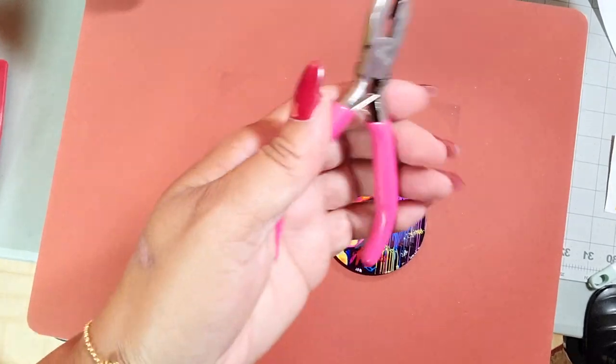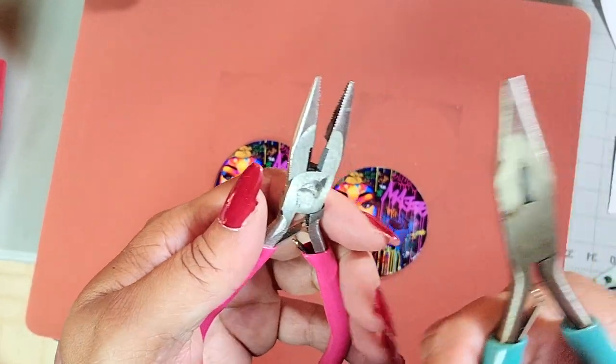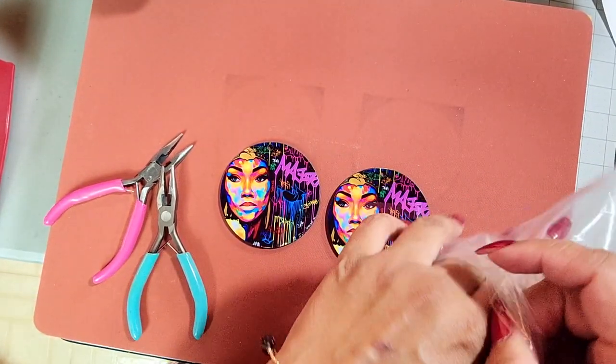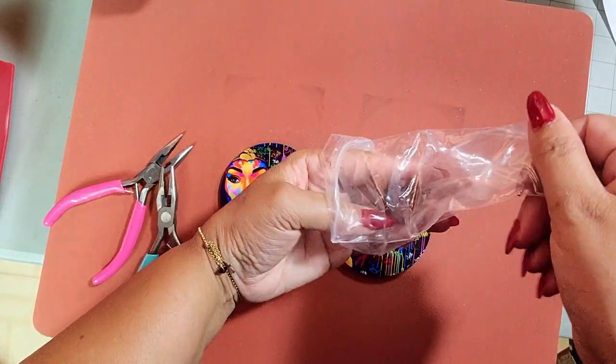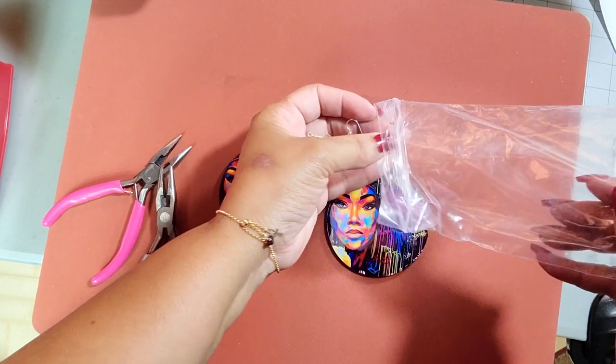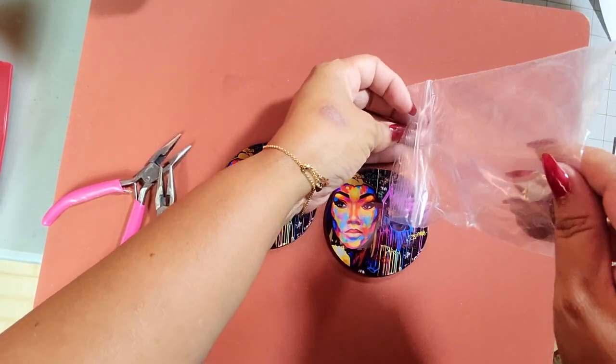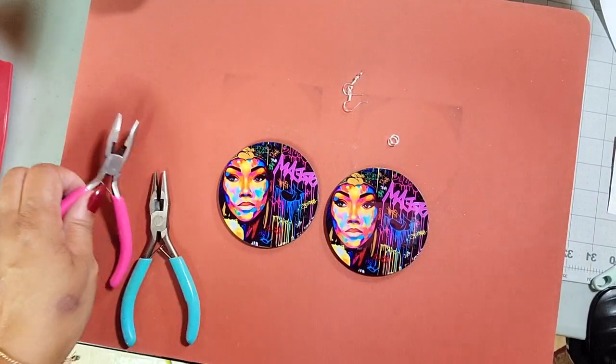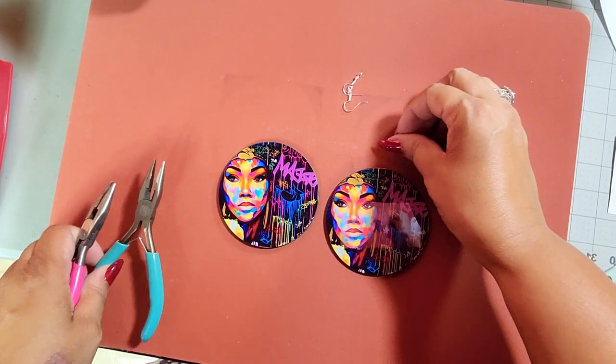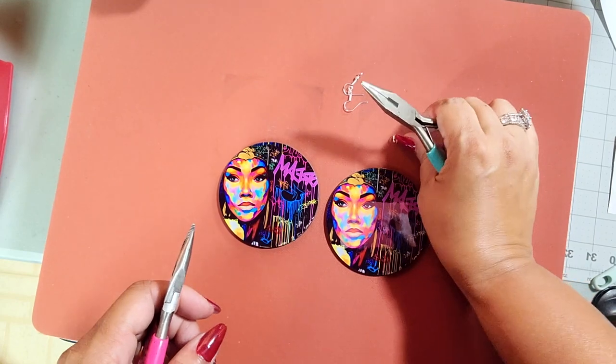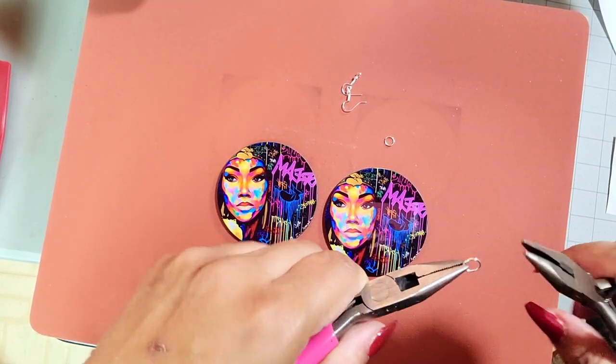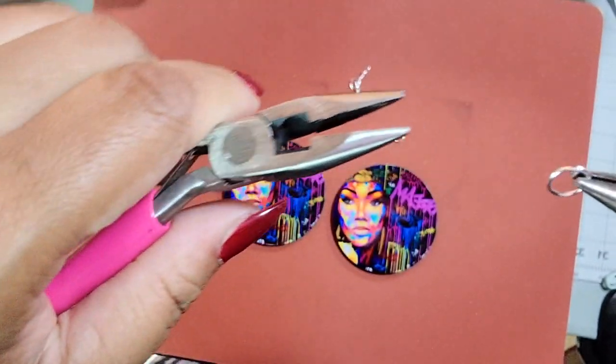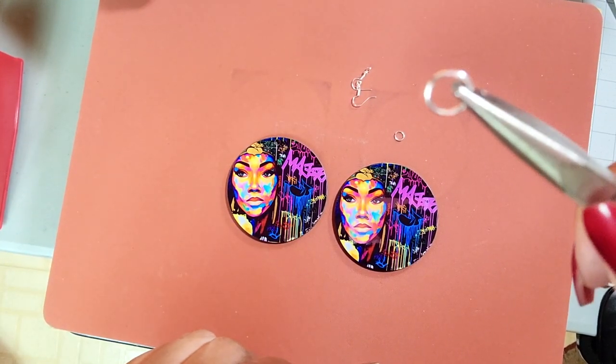And now I'm going to show you how to install the hardware on the earrings. So these are my jewelry pliers. You can get them at Michael's. You can get them at Amazon. I've seen them at Walmart, any place that has crafting supplies like Joann's, you will probably see these pliers. And if you wear jewelry, you should always have a pair or two. Okay. So what we're going to do is we're going to take a jump ring. She is so sweet for including jump rings with her sublimation blanks and fish hooks. So awesome. I'm definitely favoriting this Etsy shop.